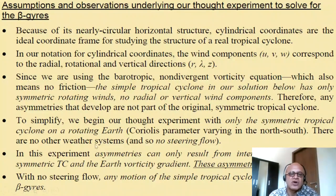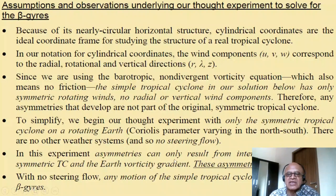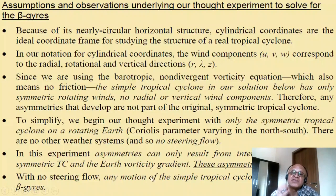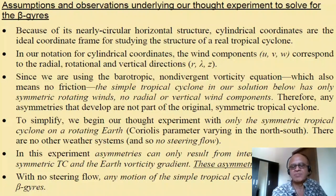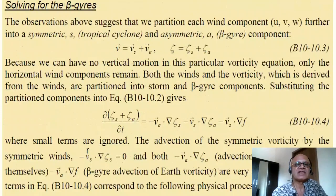We begin our thought experiment with only a symmetric tropical cyclone on a rotating earth, with the Coriolis parameter varying in the north-south direction and no other weather systems — no steering flow. In this experiment, asymmetries can only result from interactions between the symmetric tropical cyclone and Earth's vorticity gradient. With no steering flow, any motion of the simple tropical cyclone must be only due to the beta gyres.